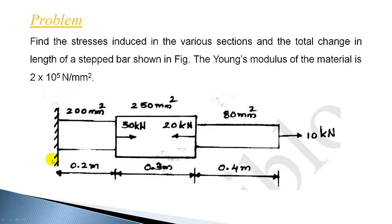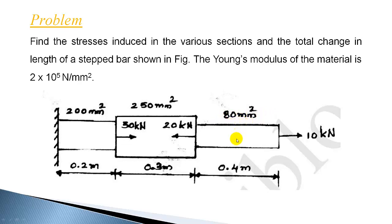This bar is fixed at the left end and it consists of three different sections. The area of cross section is directly given. For the first section the area is 200 mm square, for the second section it is 250 mm square, and the last section it is 80 mm square. The length is given in meters: 0.2, 0.3, and 0.4 meter.